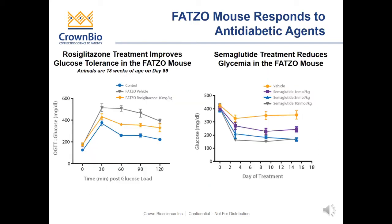The FATSO mouse responds to anti-diabetic agents. The FATSO mouse has been shown to respond to anti-diabetic therapies, providing a translatable model for evaluation of new agents. Glucose intolerance in the FATSO mouse is reduced with rosiglitazone treatment at 14 weeks of age, shown on the left-hand side. On the right-hand side, treatment with semaglutide, which has been shown to reduce both food intake and body weight, also reduces glycemia in this model.